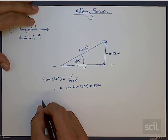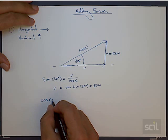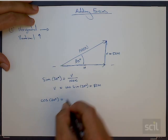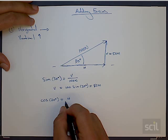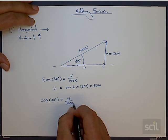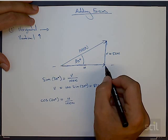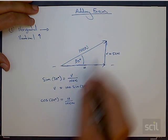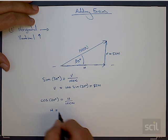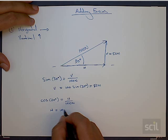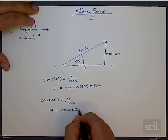Therefore, the cos 30 degrees must equal the horizontal component divided by 100. 30 degrees, horizontal over the hypotenuse. So the horizontal part of this force is 100 cos of 30 degrees.